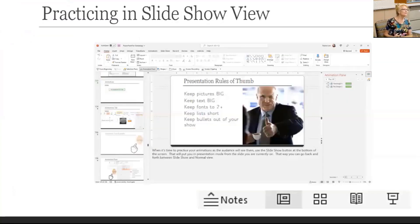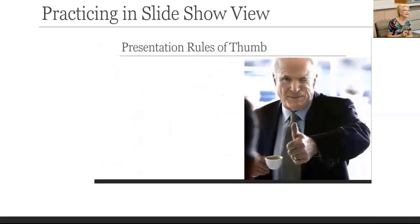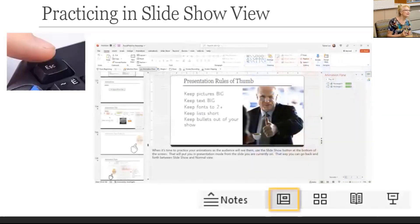When it's time to practice your animations as the audience will see them, use the slideshow button at the bottom of the screen. This will put you in slideshow view from the slide you are currently on, so you can see your animations with clicks. Then hit the Escape button to go back to normal view.